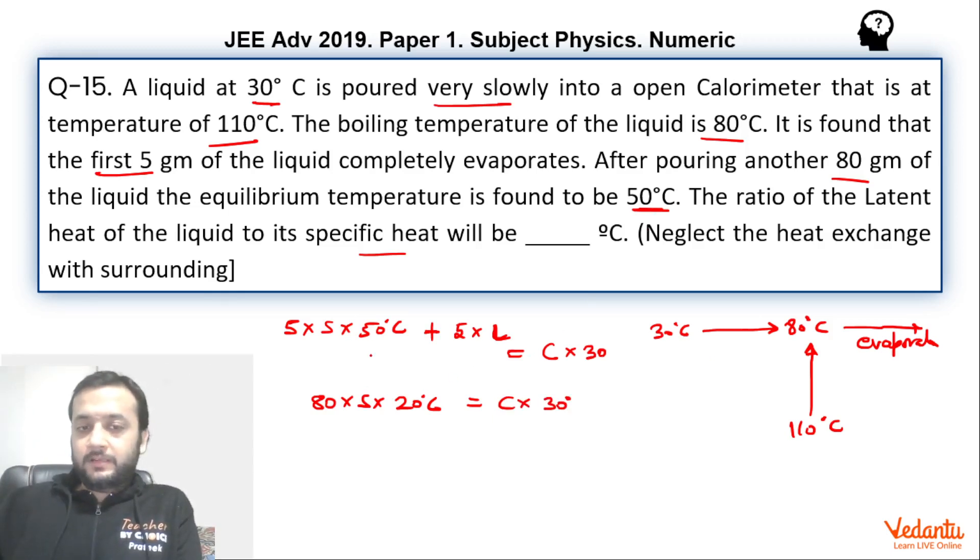So if you equate LHS of both the equations, what we will get? This is celsius I am cancelling. So if you see both the sides, what are we going to get? This is 250s plus 5L equals 1600s.